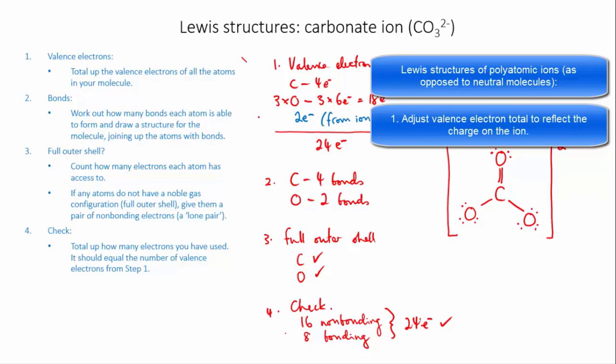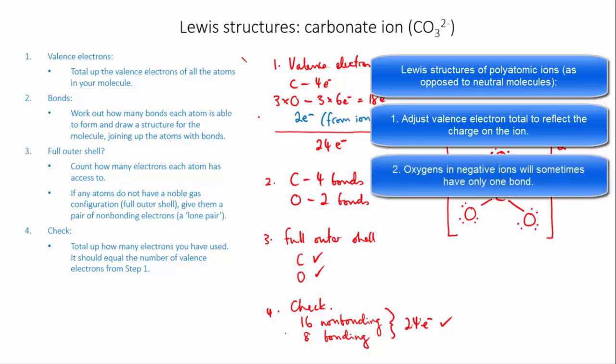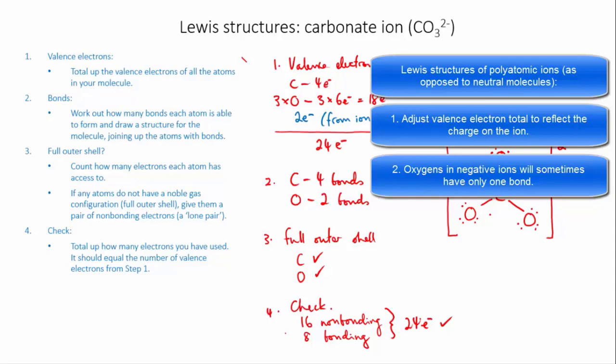Second, often with oxygens in negative ions you'll have to make do with oxygens that have only one bond, even though oxygens usually prefer to have two. This is okay as long as all of the atoms have a full outer shell and you have the correct number of electrons in your structure. And third, you need to put your final Lewis structure in brackets and indicate the charge on the ion.